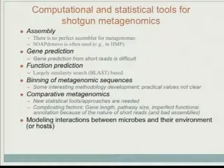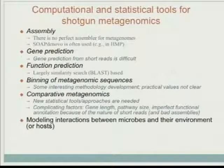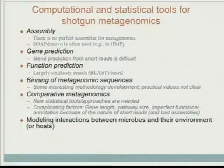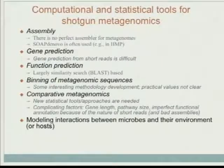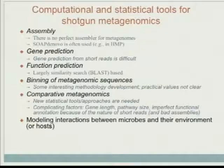For gene prediction, if you have very long contigs it doesn't matter - you can use whatever you want. But as I said, probably like 50% of reads cannot be assembled. It's very common that 50% of the reads in a metagenomic dataset cannot be assembled, so you will have so many short reads.